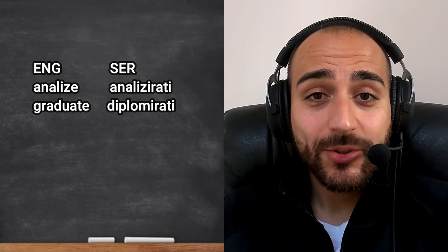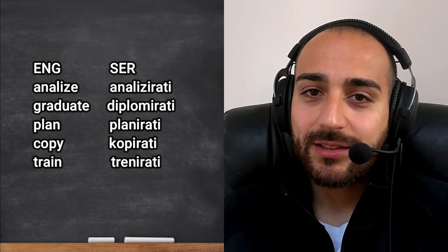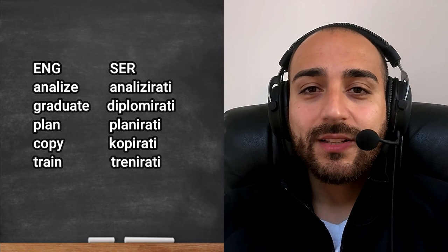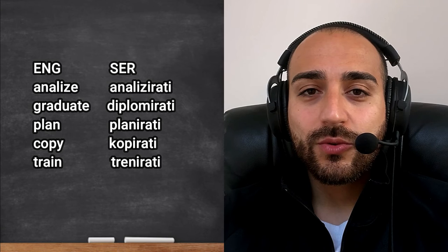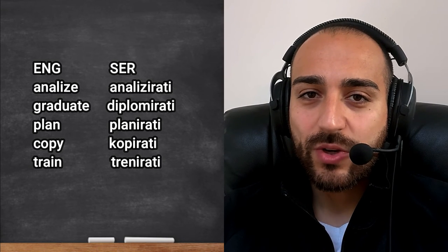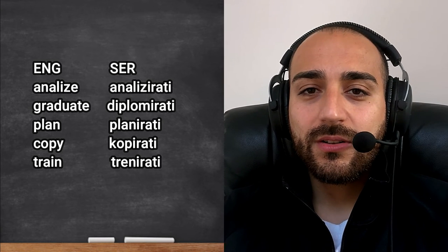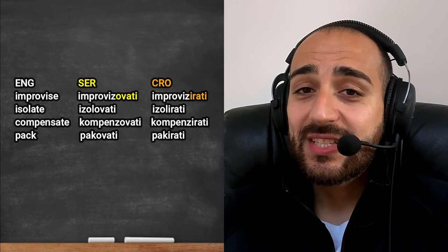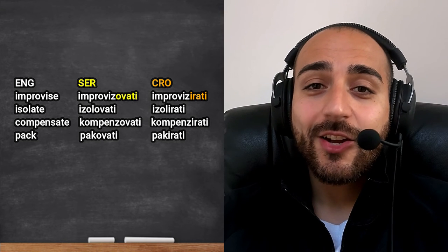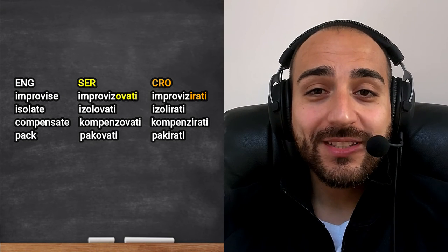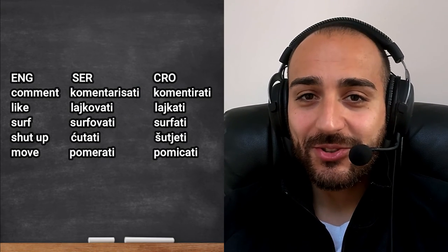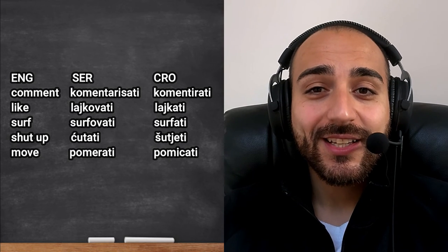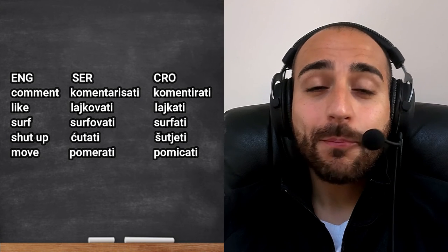Although there are many Serbian verbs that also end in '-irati': analogizirati, formalizirati, diplomirati, planirati, kopirati, trenirati — we use 'trenirati' for working out or physical exercise. There are also '-ovati' in Serbian vs '-irati'/'-ati' in Croatian: improvizovati vs improvizirati; izolovati vs izolirati; kompenzovati vs kompenzirati; pakovati vs pakirati; komentarisati vs komentirati; lajkovati vs lajkati; surfovati vs surfati; ćutati vs šutjeti; pomerati vs pomicati.